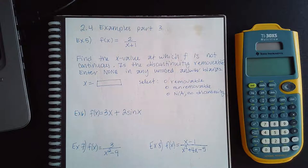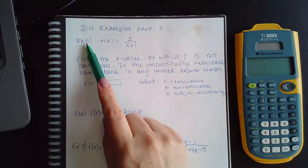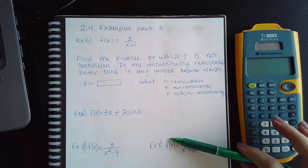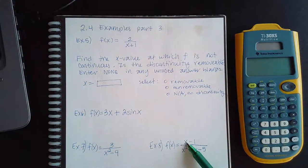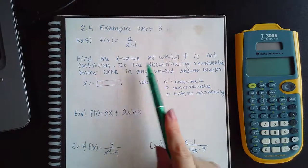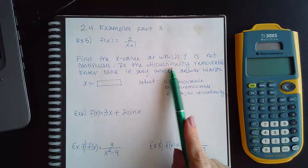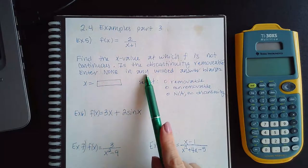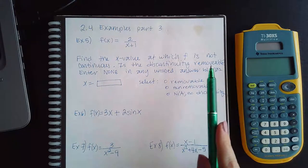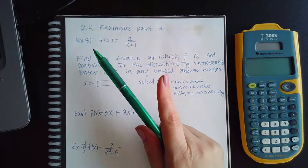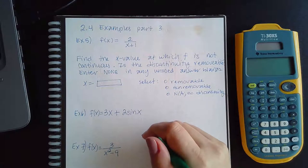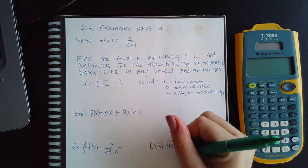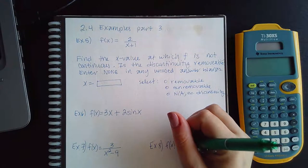Here we are with 2.4 examples part three. We're going to continue with example five and cover six, seven, and eight. In each of these examples the instructions are the same: find the x value at which f is not continuous, determine if the discontinuity is removable, and enter none in any unused answer blanks. So I have to find the discontinuity on my own without being given a value to test.